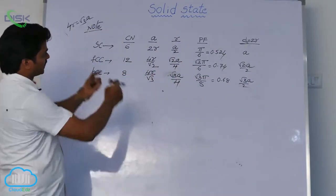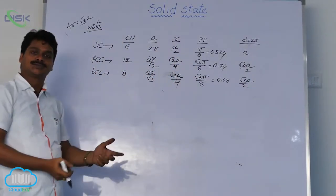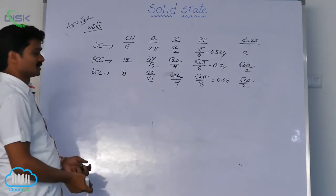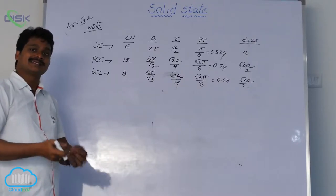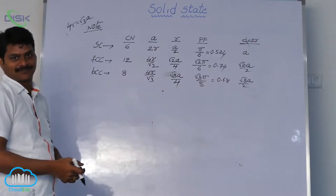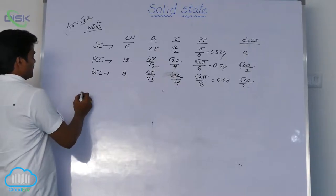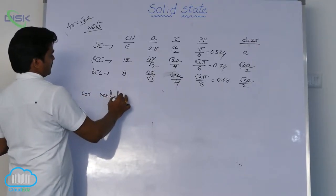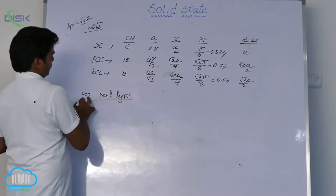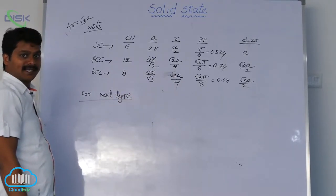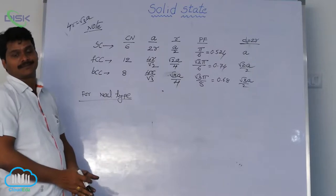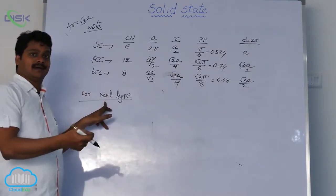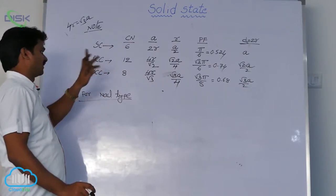These are the formulas that are useful to calculate objective type questions. But sometimes, problems on NaCl type structures will be given. For NaCl type structure, of course we discussed NaCl as FCC geometry. But you know, in this FCC geometry, formulas are not same as in FCC.